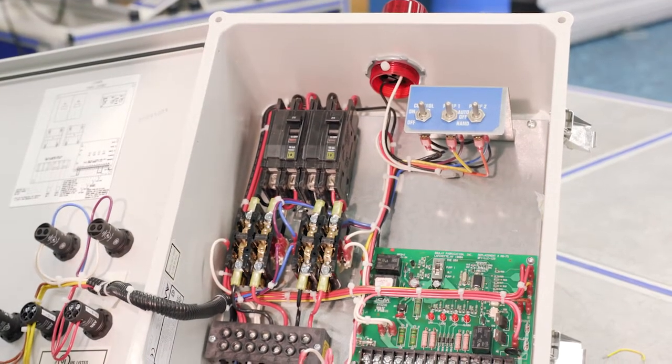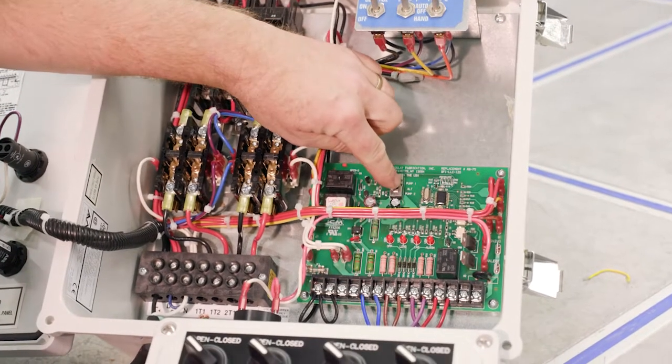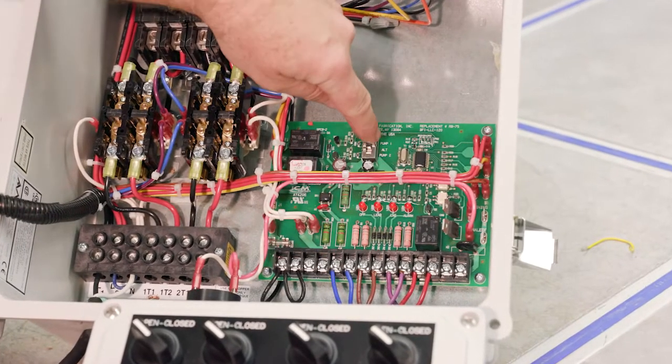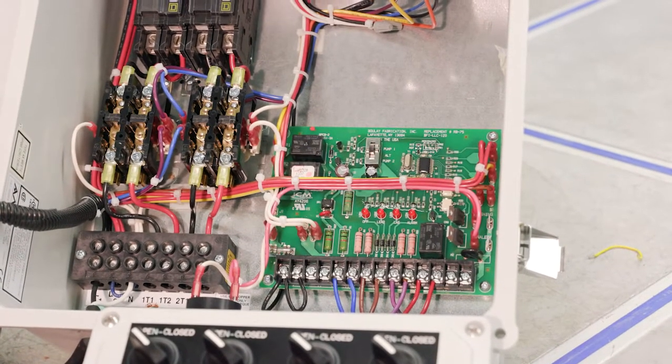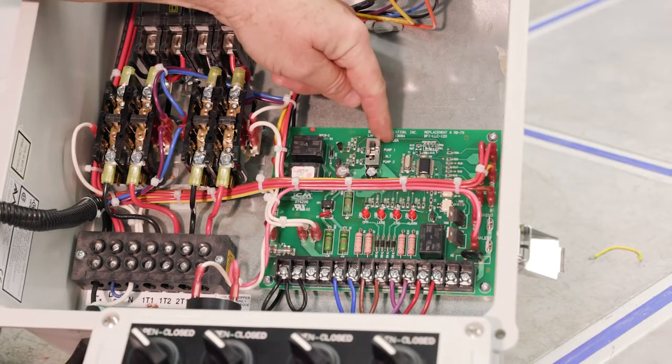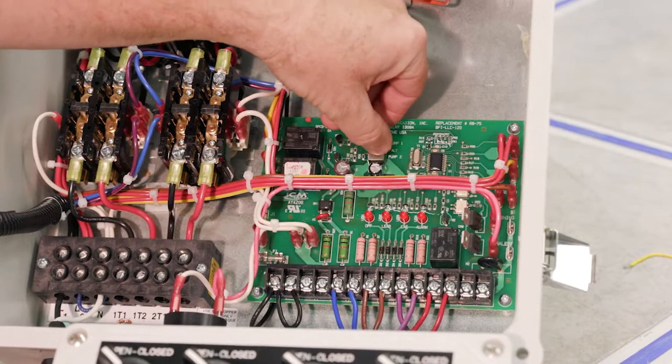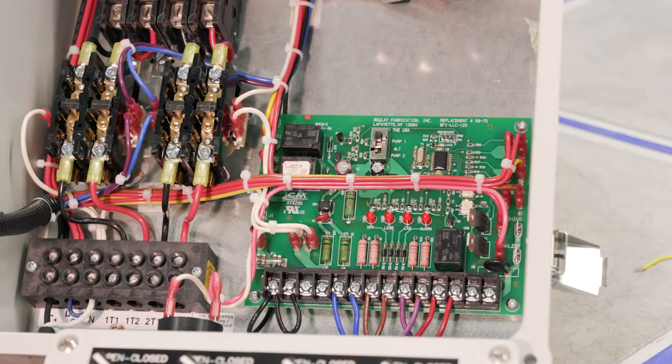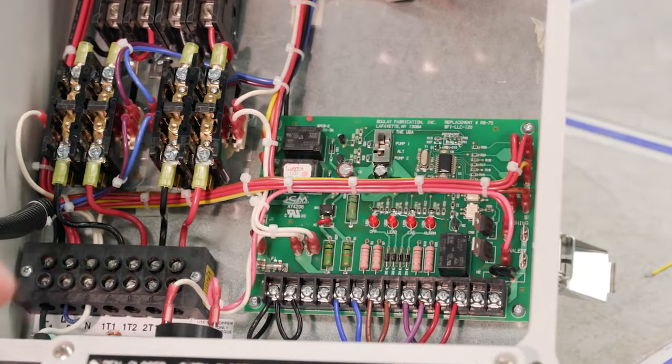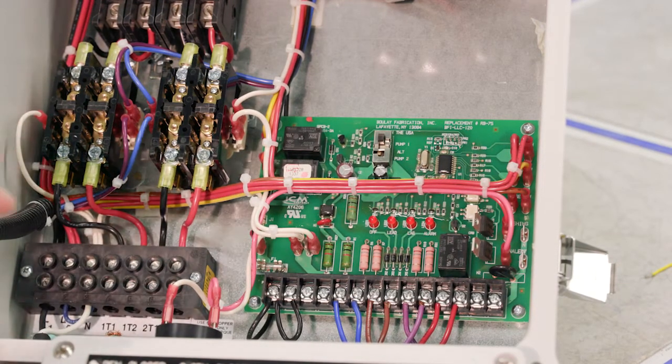The other feature that this box has is the alternator. So in normal applications, we want to leave that switch in the middle which is set to alternate. The two options that you have other than that are move it up to pump one and move it down to pump two. So we'll show you sort of how it works. So let's say that we move it up to pump one. It's basically saying that I've pulled pump two out, and it's out for repair. So I only want this thing to call for pump one.